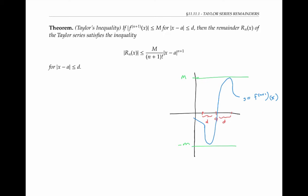Now in the statement of Taylor's inequality, the number M can be chosen just to work for a particular derivative. But really nice things can happen if we are able to choose the same number M to work for all derivatives, for all values of n.